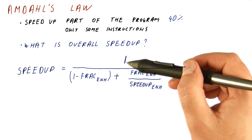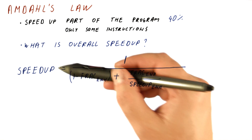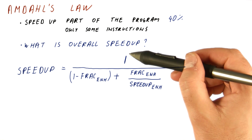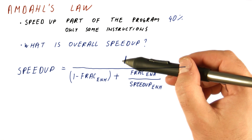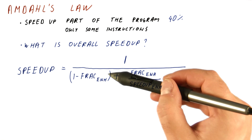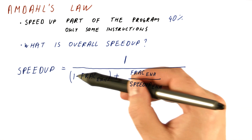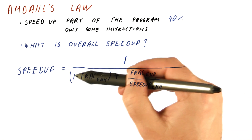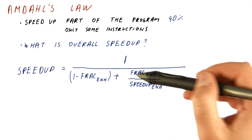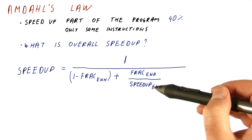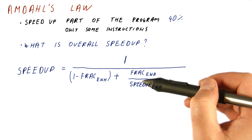How did we get there? The speed up in this case is the improvement in performance, which is 1 over the new execution time relative to the old. So this is the part that we didn't improve — it just stays there. The part that we did improve is shorter by the amount of improvement on that part.